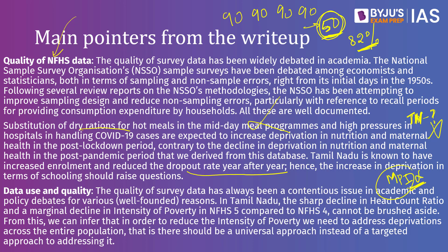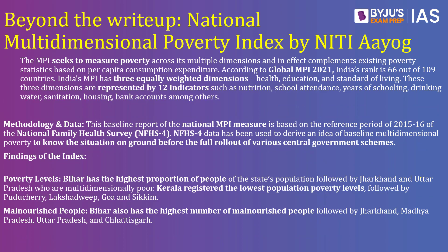The Multi-Dimensional Poverty Index, or MPI, is actually a global index published by UNDP — the United Nations Development Programme. Its own version is also published in India by the NITI Aayog, so there is an international MPI and an Indian one. The global MPI published by UNDP has ranked India at 66th place out of 109 nations. Let's first focus on the Indian national MPI given by the NITI Aayog.